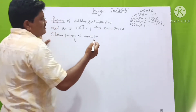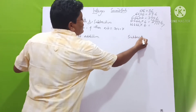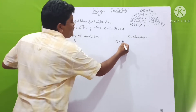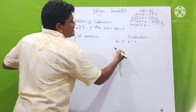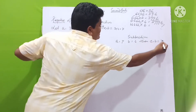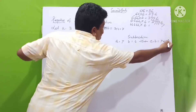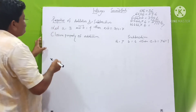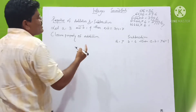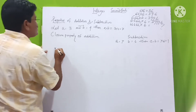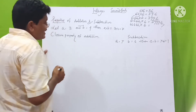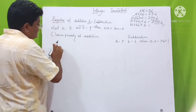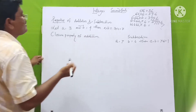Closure property of subtraction: here also take two integers, like a = 7 and b = 6. Then a − b = 7 − 6 = 1, and 1 is also an integer. So here we know that this is the closure property of subtraction. We can say integers are closed under addition and subtraction.